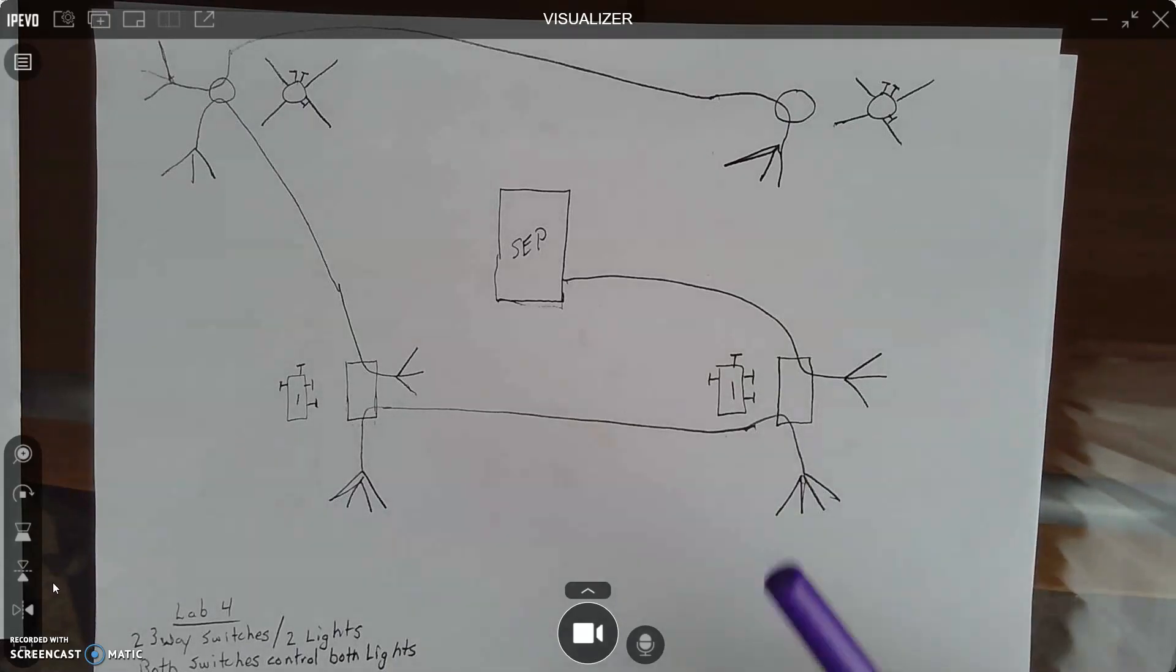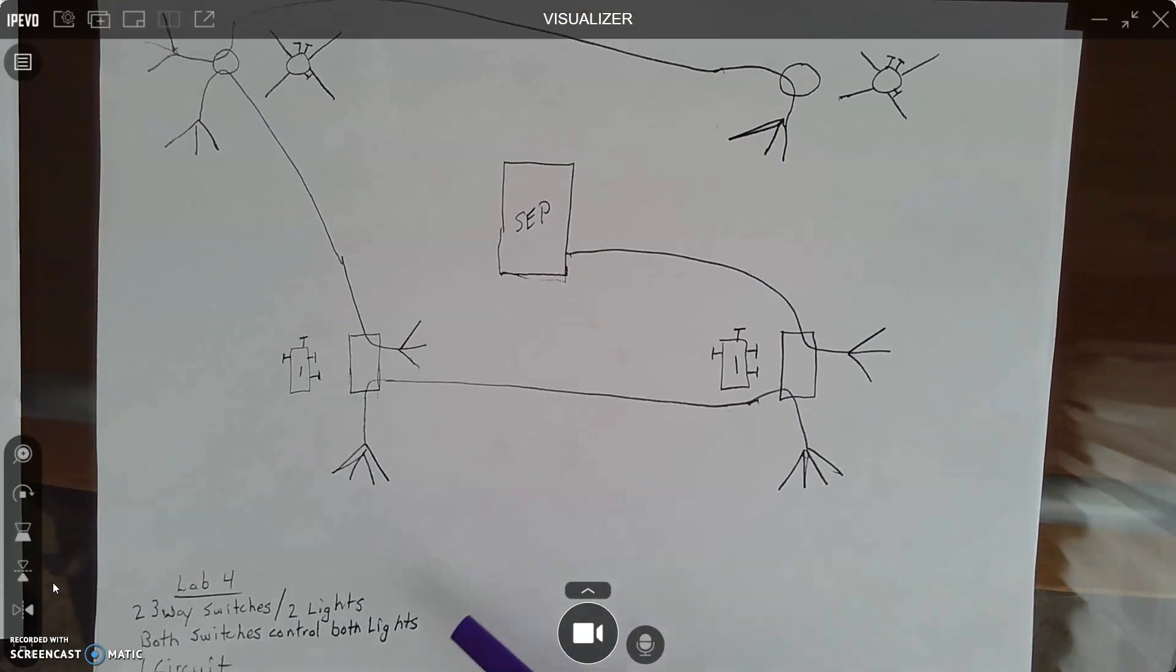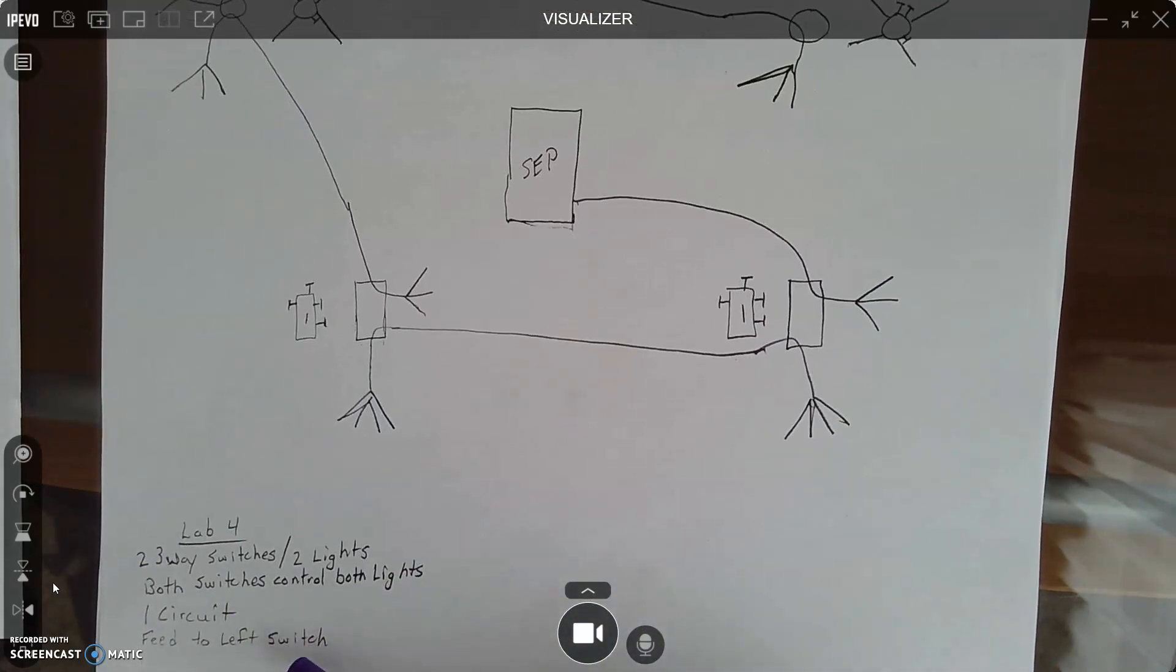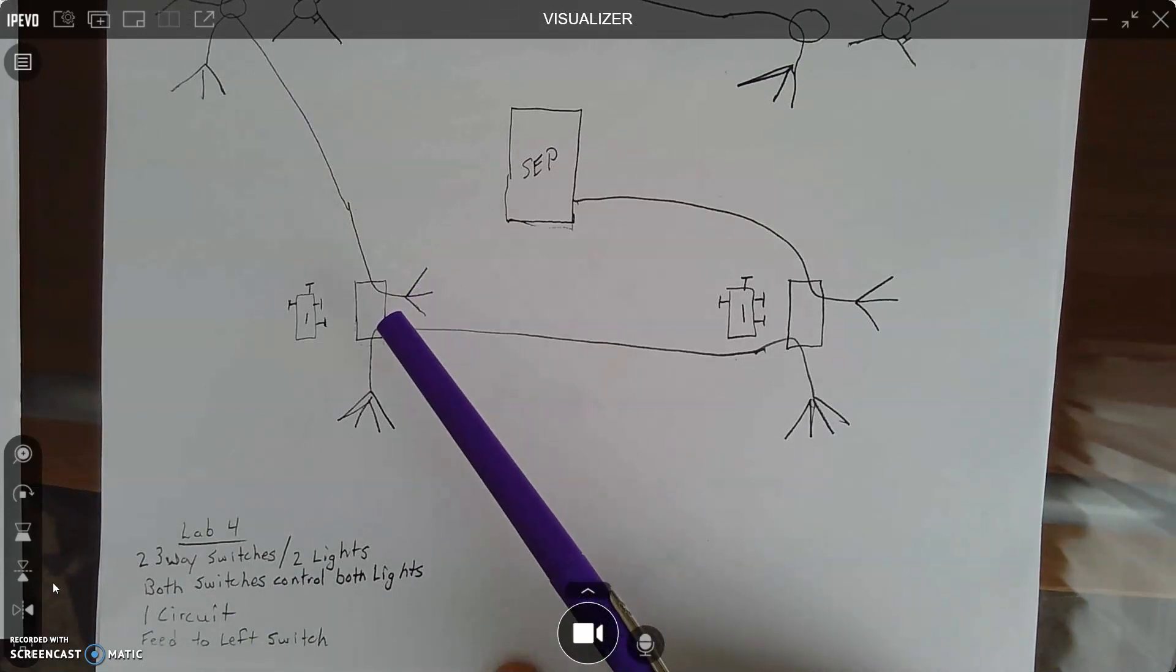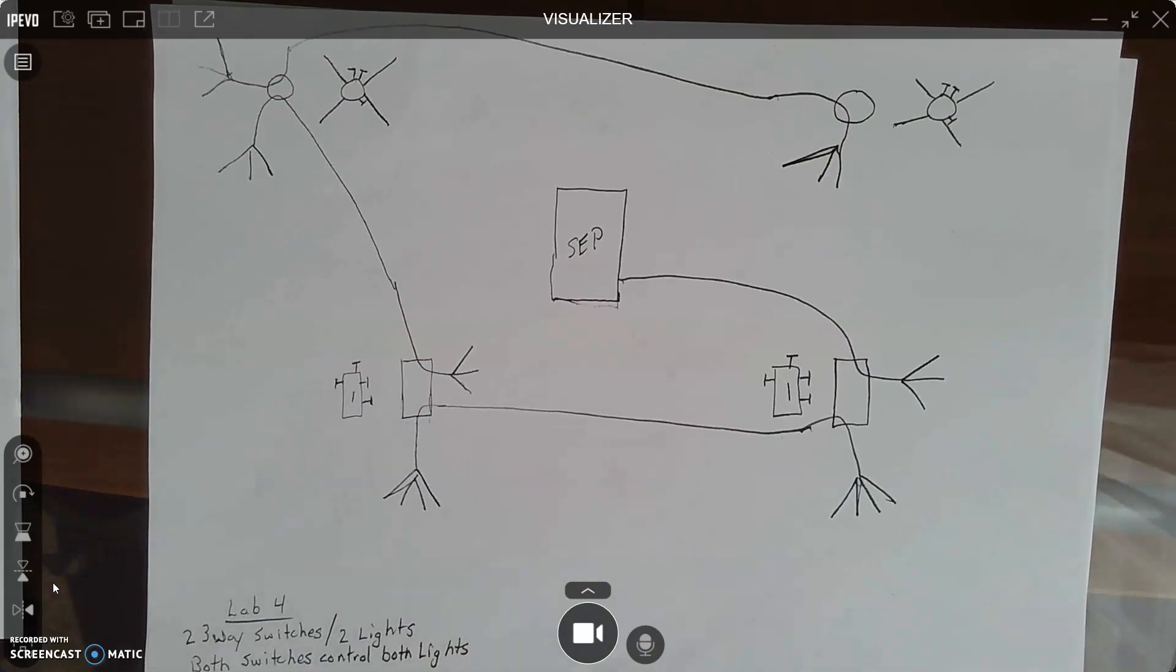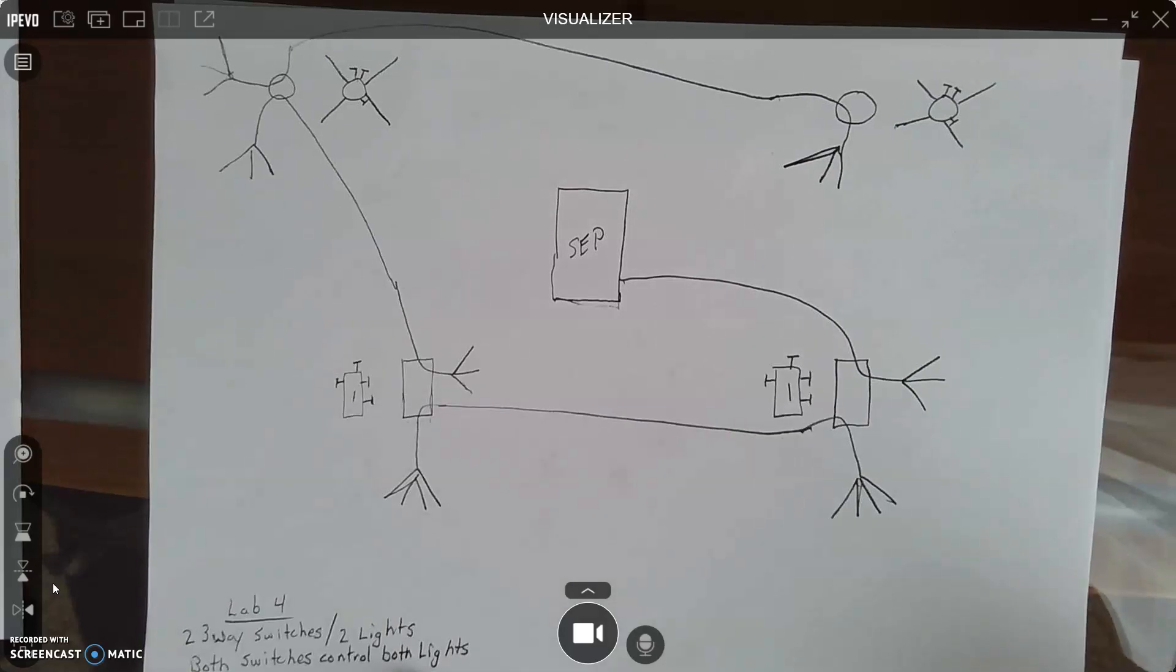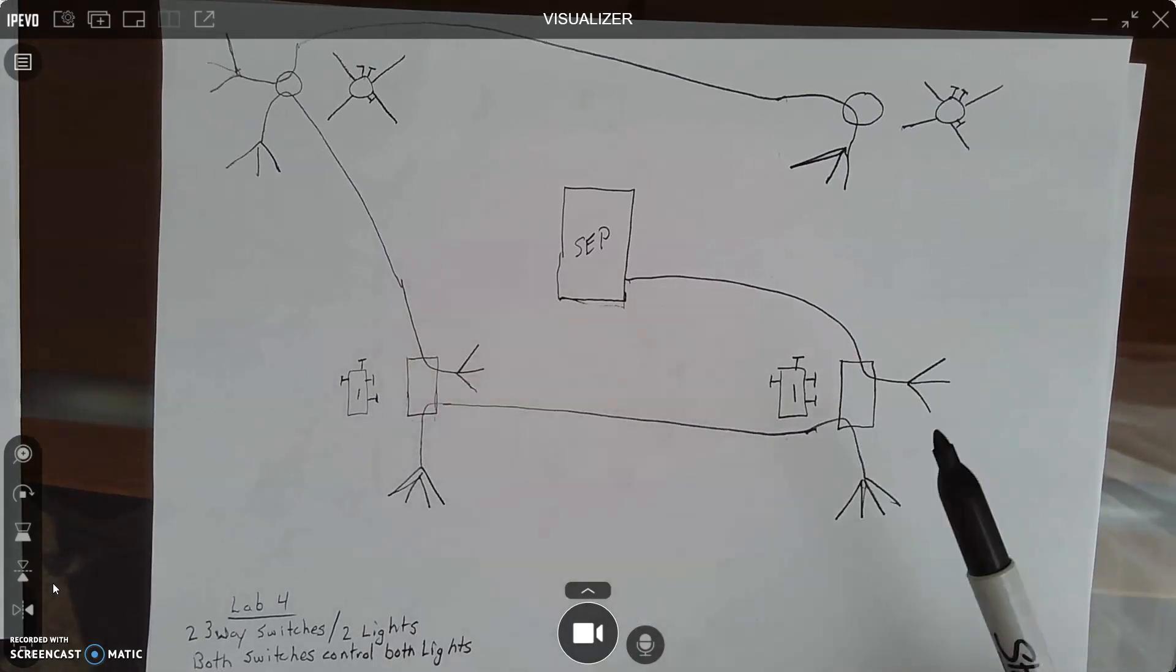And again, I've went over this, I diagrammed this on the board. So that should be pretty clear. What we need to do now is understand we have a three-way switch circuit with two lights. Both switches control the lights. It's all on one circuit, but the feed is to the left switch box. Right here. So how do we wire this? And I'm going to tell, again, the key to this.